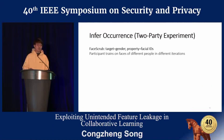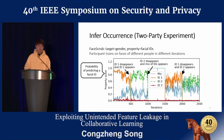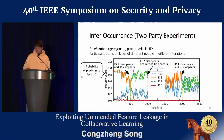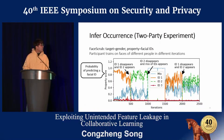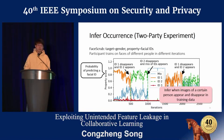Next, I'll show how to infer the time when a certain property occurs during training. We used the FaceGrub dataset, where the target is to predict gender given a face image, and the property is facial IDs. The participant trains on faces of different people in different iterations. The plot shows the probability of predicting different facial IDs in each iteration, with different colors corresponding to different facial IDs. By observing the change in colors, the adversary can infer when a certain person appeared and disappeared in training. For example, at iteration 500, the orange curve drops and the green curve goes up, corresponding to when ID 1 disappeared and ID 2 appeared.